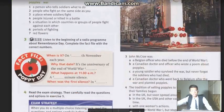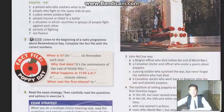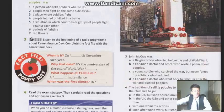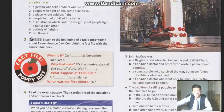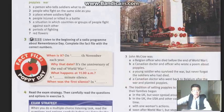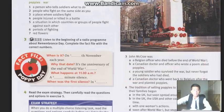Question 3: John McCrae was — A) a Belgian officer who died before the end of World War 1, B) a Canadian doctor and officer who wrote a poem about poppies, C) a young soldier who survived the war but never forgot the soldiers who had died, or D) a Canadian doctor who went back to Belgium after the war and planted poppies. Question 4: The tradition of selling poppies to help ex-soldiers and their families began — A) in the UK but soon spread around the world, B) in the UK, the USA and other countries at the same time, C) due to one woman's actions, or D) soon after World War 1 but stopped later.